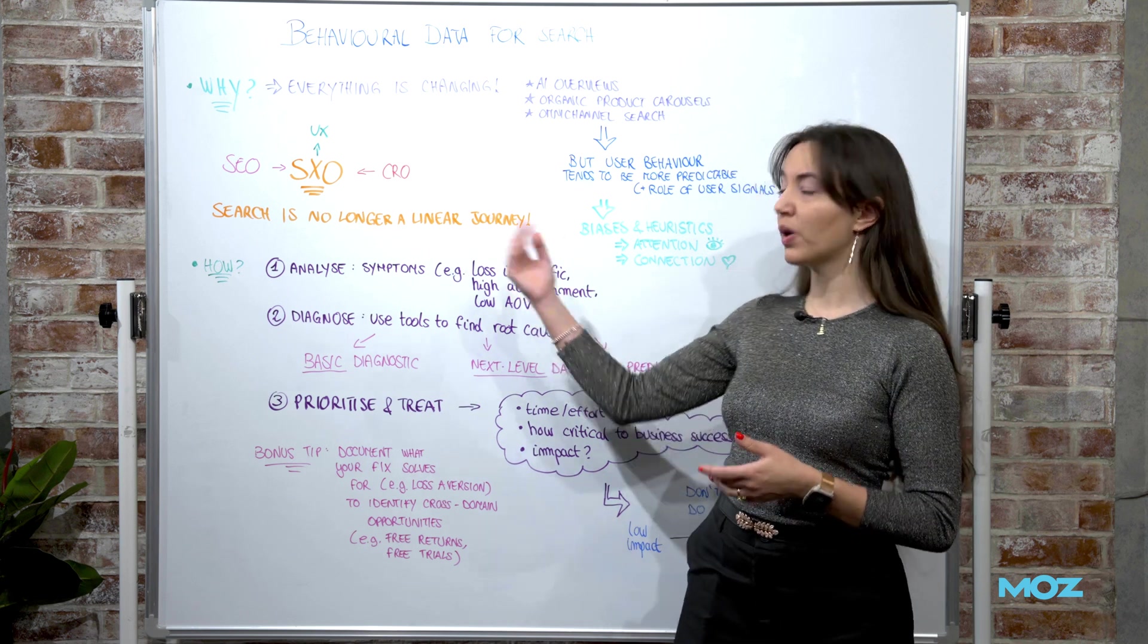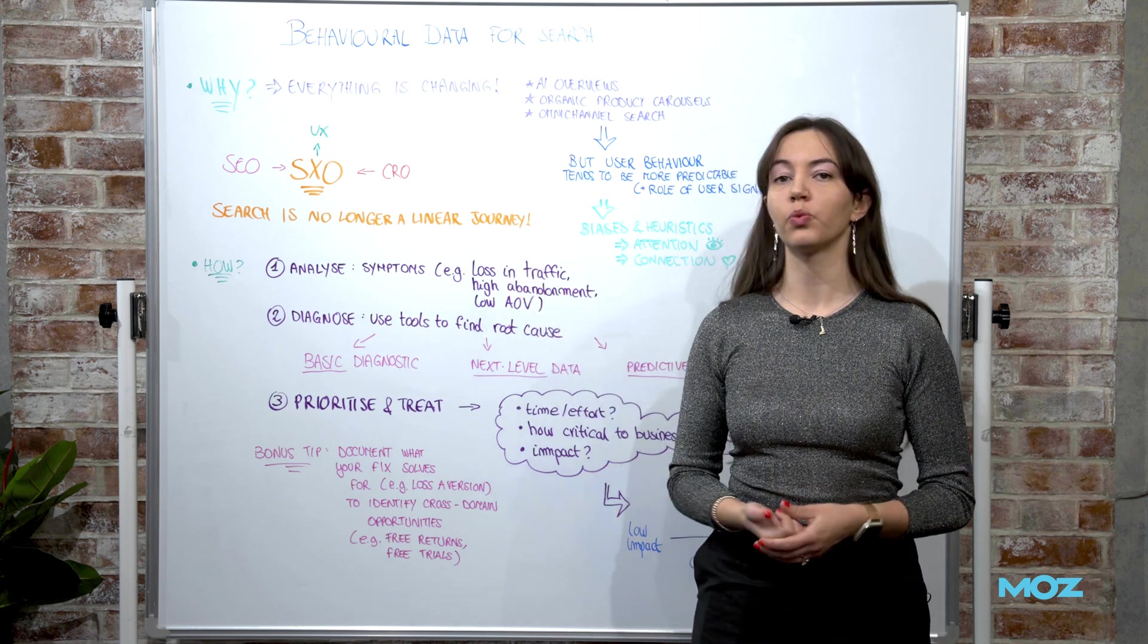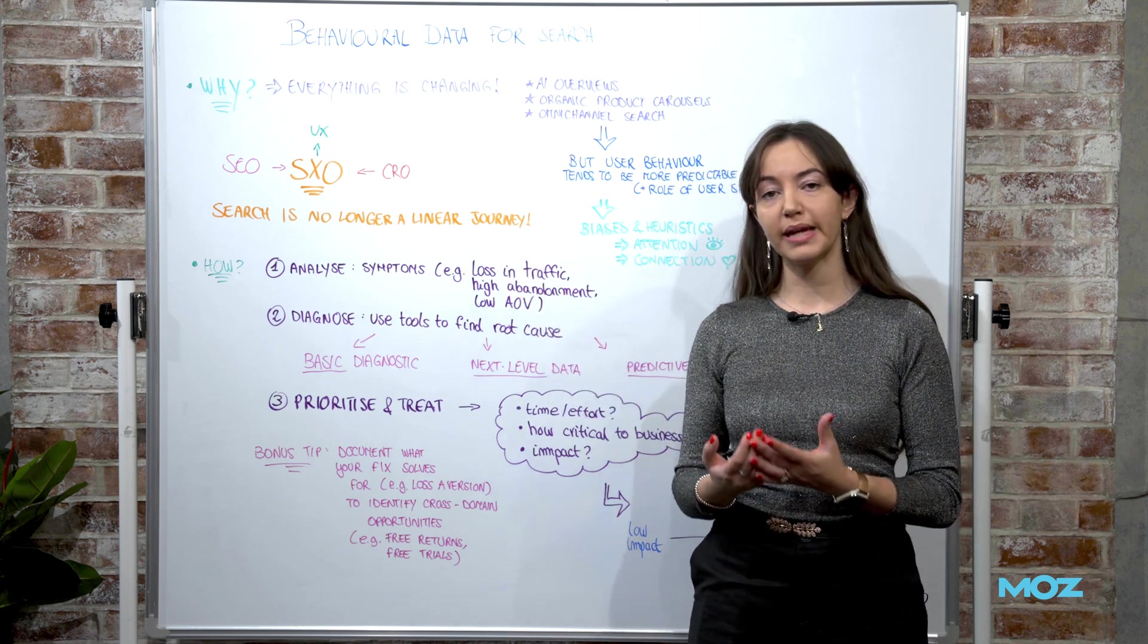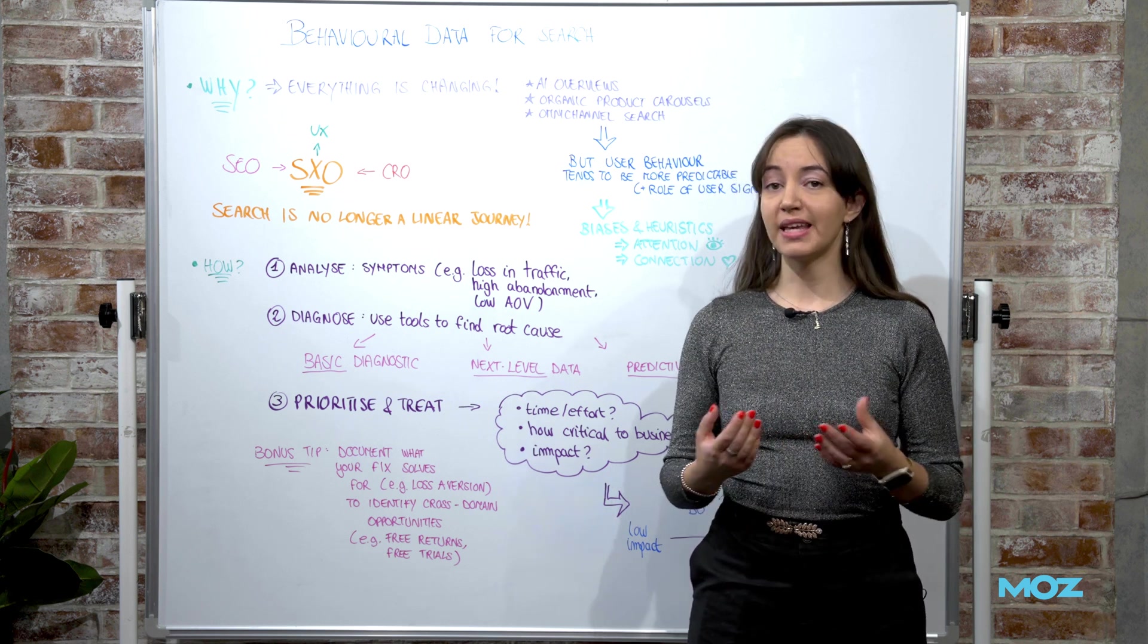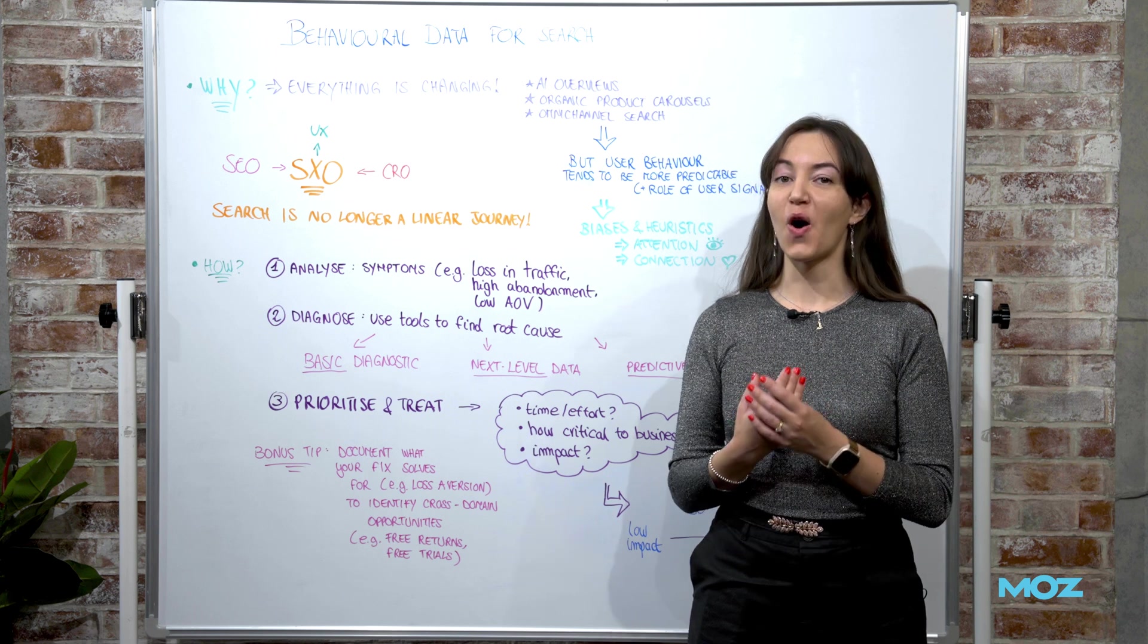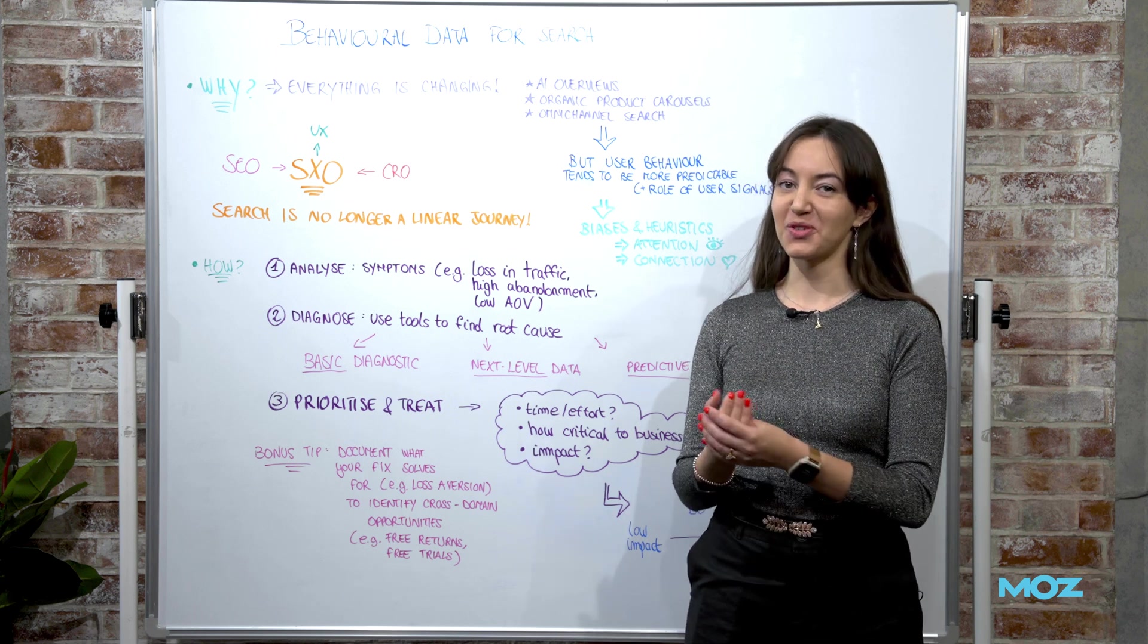Something that is now known as SXO, Search Experience Optimization, which includes SEO but also UX and CRO. And what these disciplines have in common is the user which is the end beneficiary of any optimization efforts we make.